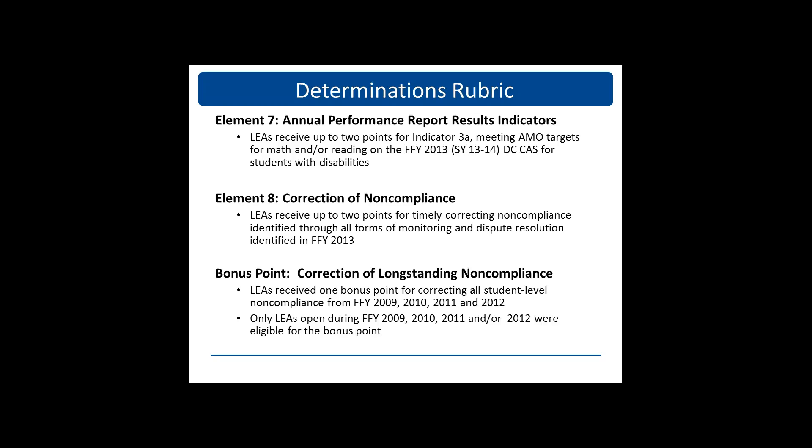Element 7 is Annual Performance Report Results Indicators, and LEAs can receive up to two points for Indicator 3A. Element 8 is Correction of Noncompliance — LEAs can receive up to two points for timely correction of noncompliance. There are also Bonus Points for Correction of Long Standing Noncompliance. LEAs can receive one bonus point for correcting all student-level noncompliance for fiscal years 2009, 10, 11, and 12. Only those LEAs that were open during those years are eligible for this bonus point.